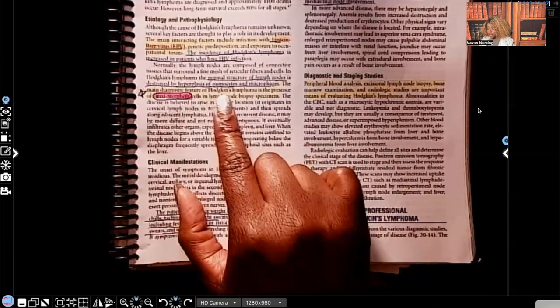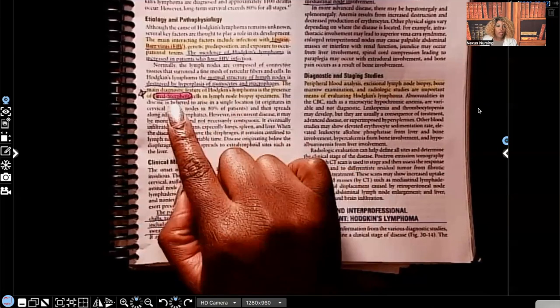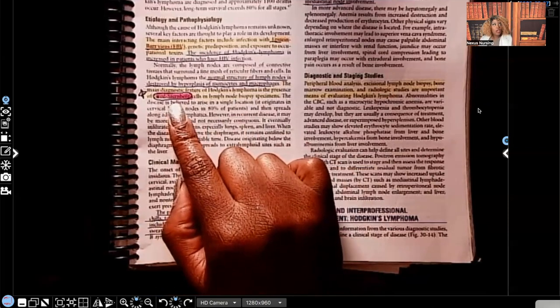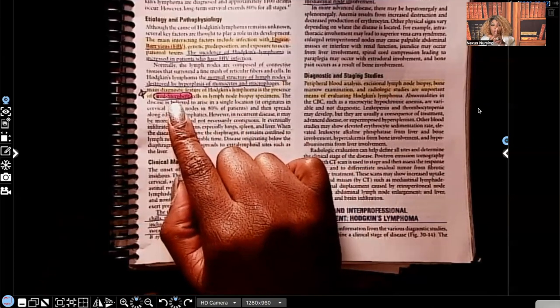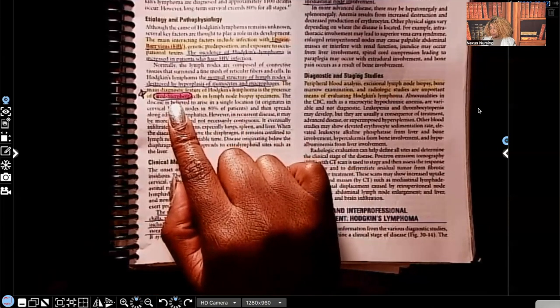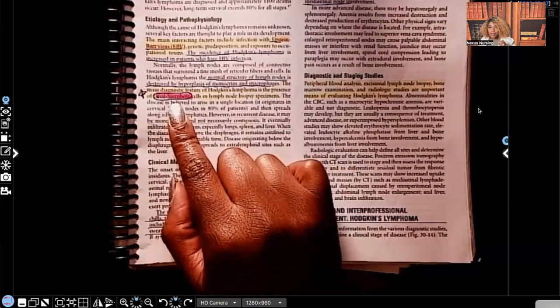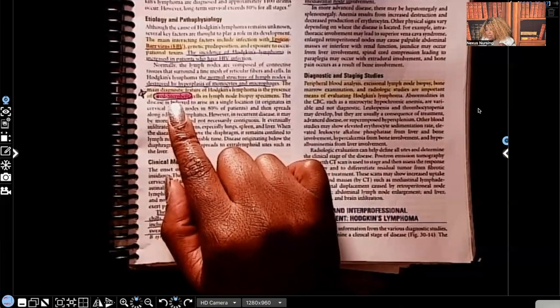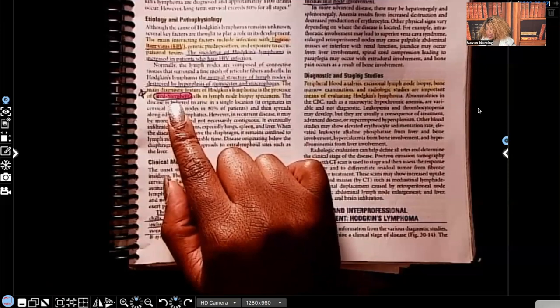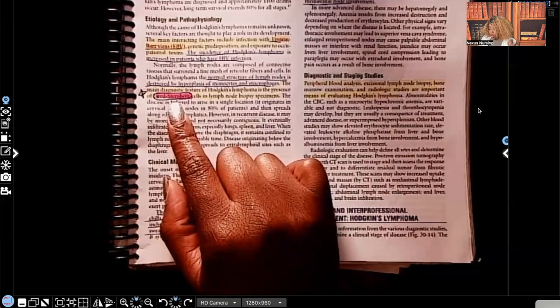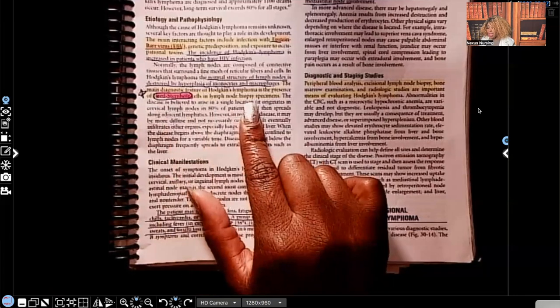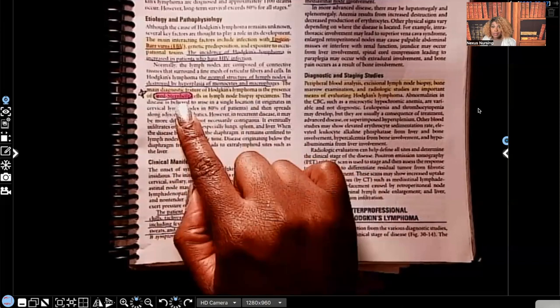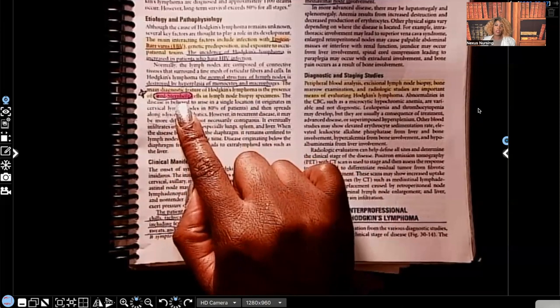The main diagnostic feature of Hodgkin's lymphoma is the presence of Reed-Sternberg cells. When you see Reed-Sternberg cells, you need to be thinking of Hodgkin's lymphoma. The main diagnostic, so this is how we diagnose it. This is how we know you have Hodgkin's and not something else. The main diagnostic feature of Hodgkin's lymphoma is the presence of Reed-Sternberg cells in the lymph node biopsy specimens. So they're going to biopsy a portion of that lymph node, and if they see those Reed-Sternberg cells, they know that's Hodgkin's lymphoma.